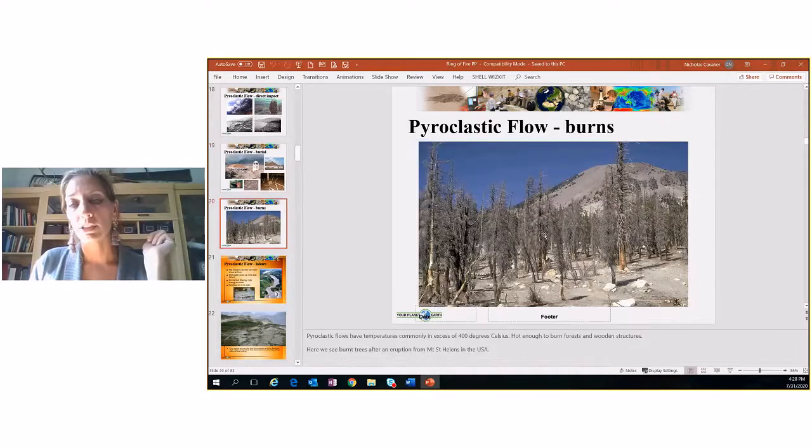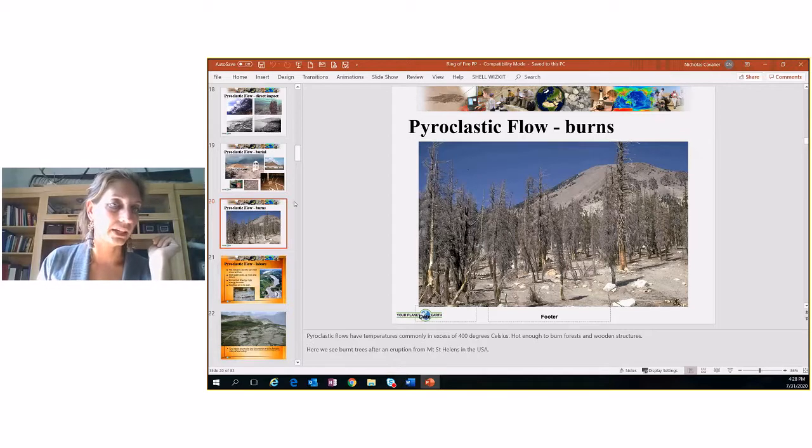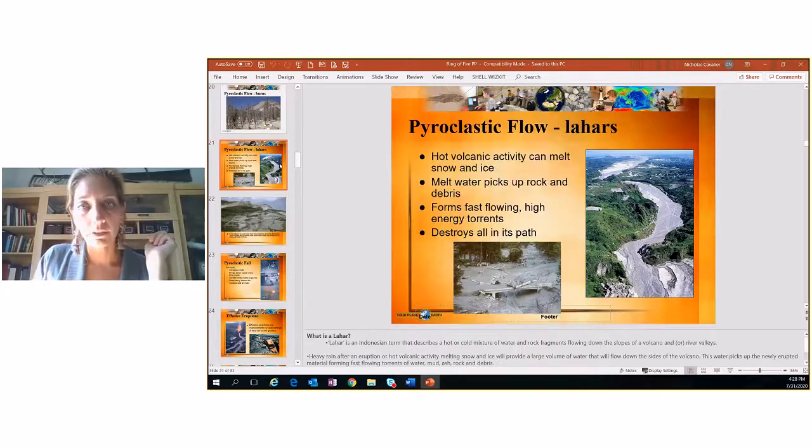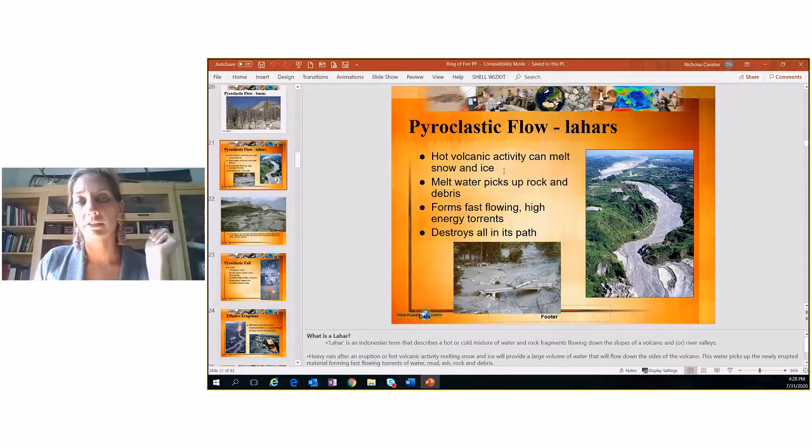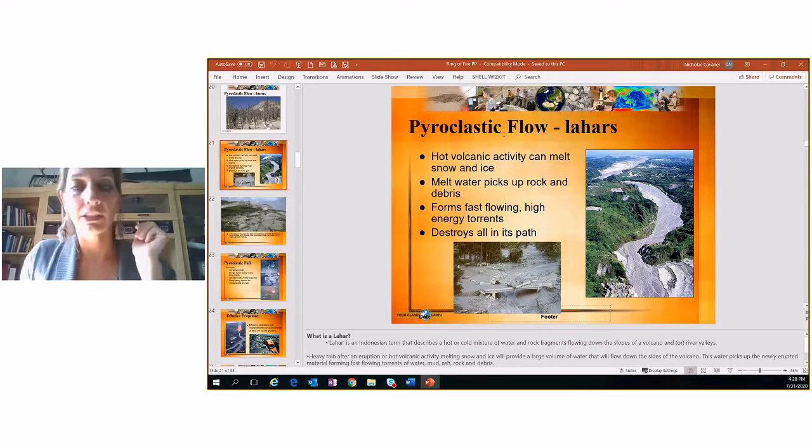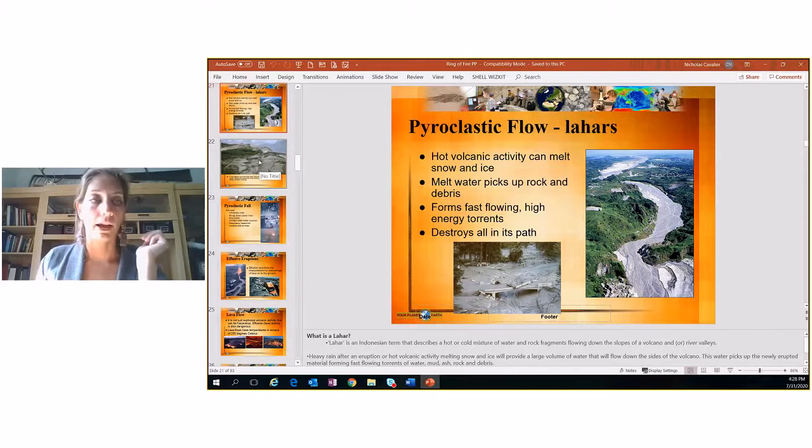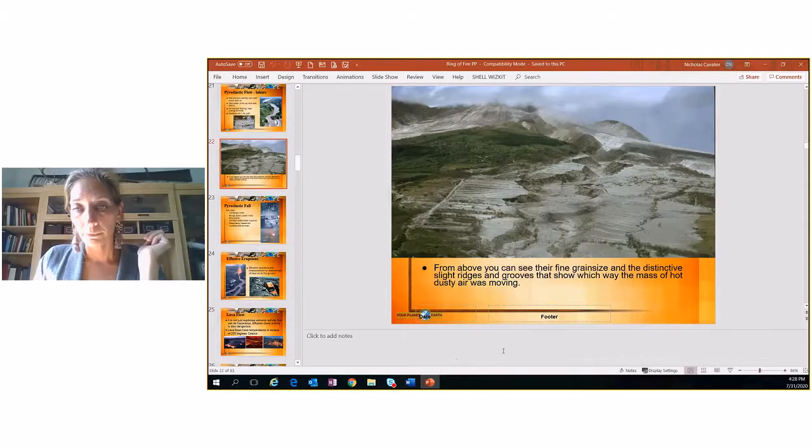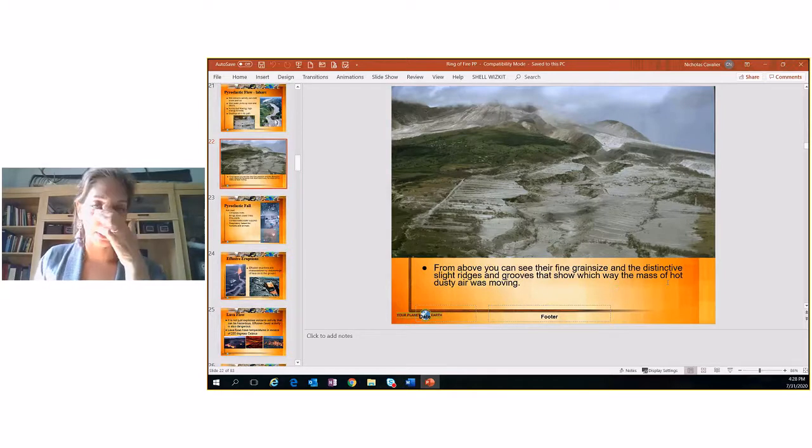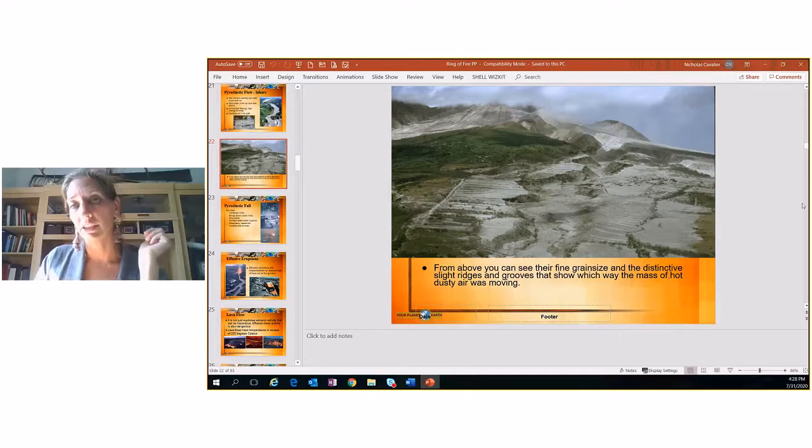So this hot volcanic activity actually melts snow and ice, which can cause torrents, flooding. So if the city didn't have enough damage from the volcano erupting, it melts the snow and ice and actually could cause flooding and cause even more damage. So catastrophic is what we would call that. Severe damage. You can see the ridges and grooves that show which way the mass of hot, dusty air was moving. So the air was kind of pushing this to one side and you can see the streaks that it's left. So even the air can cause damage.